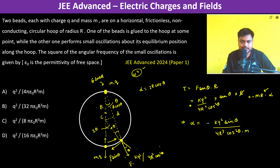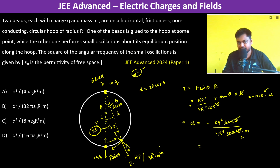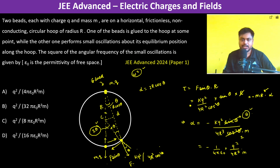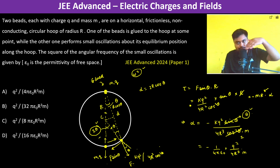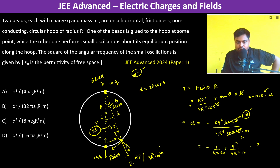For small θ, cosθ ≈ 1 and sinθ ≈ θ. The actual angular displacement from the mean position measured at the center is 2θ, and we calculated the torque about the center, so we write the equation as α = −[Q²/(4πε₀ · 4R³m)] · θ, then express it in terms of 2θ by multiplying and dividing by 2.